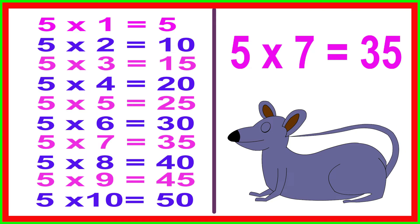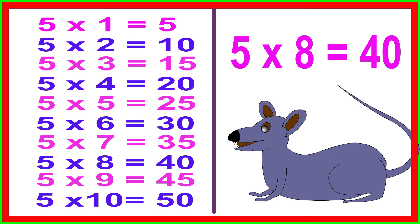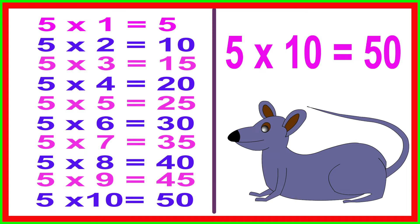5 times 7 equals 35, 5 times 8 equals 40, 5 times 9 equals 45, 5 times 10 equals 50.